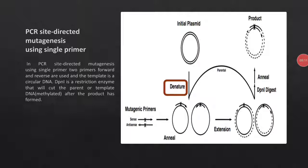Denaturation breaks hydrogen bonds and separates both parent strands. Mutagenic primers — one sense and one antisense, shown with cross signs — are then annealed to the parent strands. Nucleotides are added during extension. DpnI enzyme is used to break down the parent DNA strand, as it is specialized to digest methylated DNA strands. Since the newly synthesized strand is non-methylated and the parent strand is methylated, the parent strand is chopped up by DpnI.